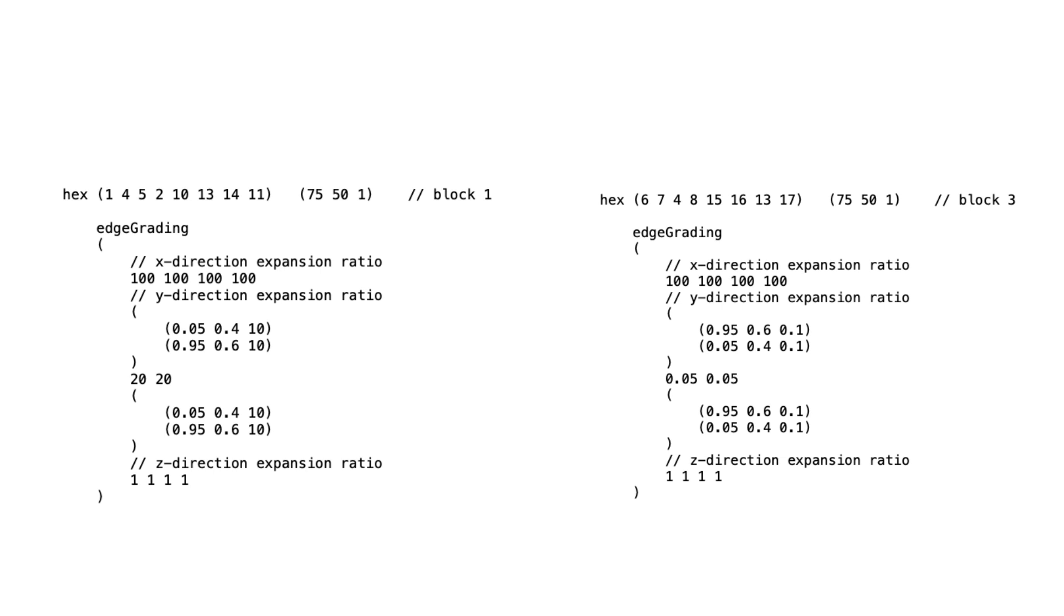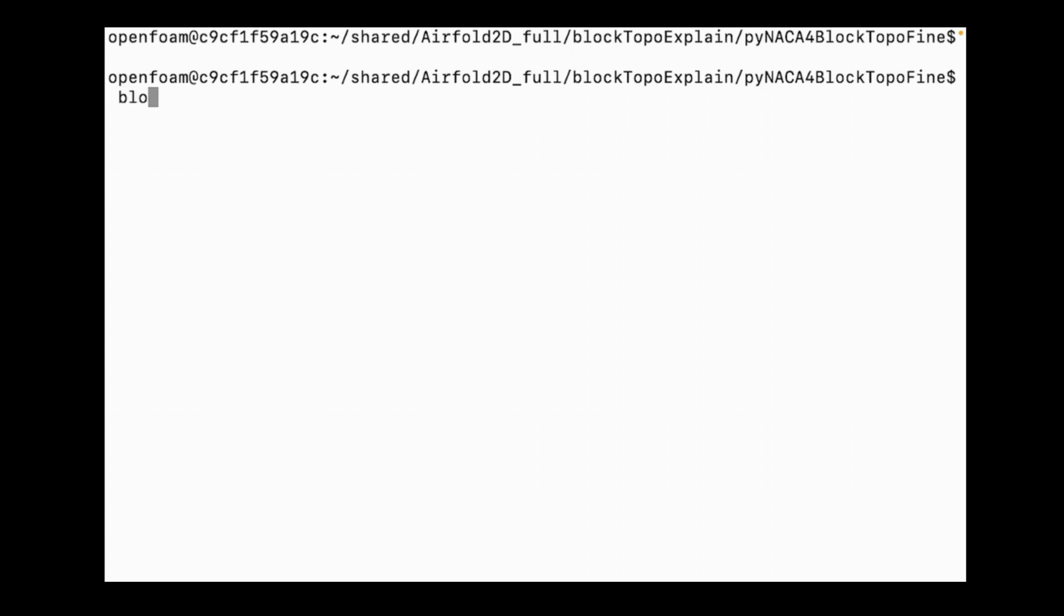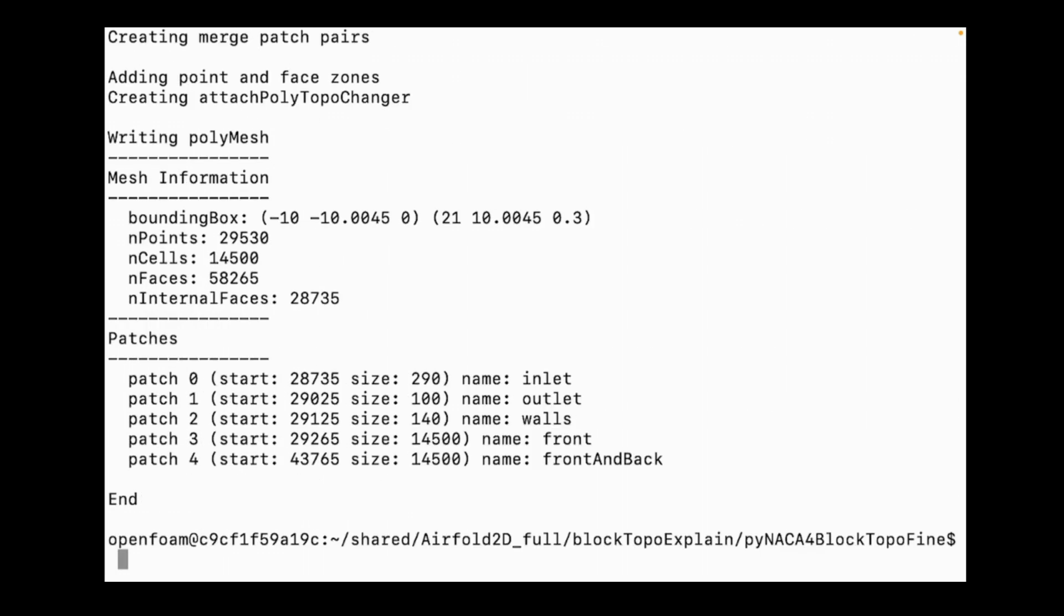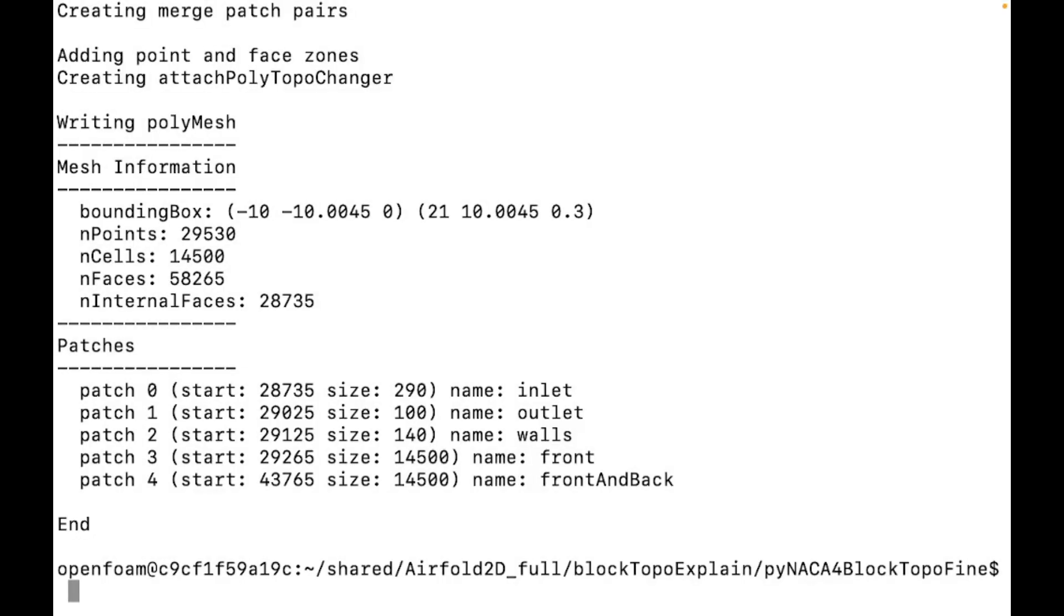Now that we have completed our BlockMeshDict setup, let's move on to generate the mesh itself. To do this, open your terminal inside the case directory and simply type BlockMesh. This command will read all the information we have defined inside the system BlockMeshDict file and create the mesh inside the constant polymesh folder.